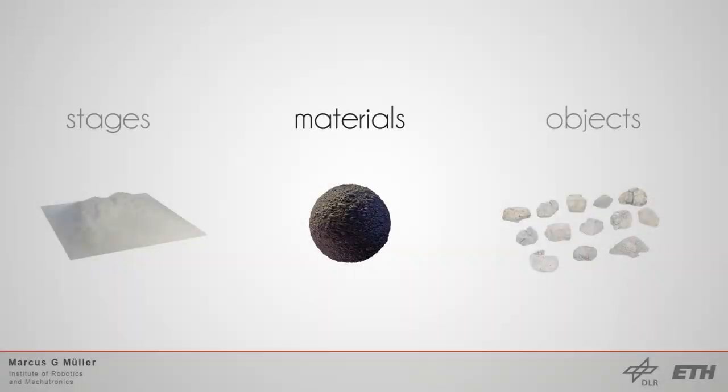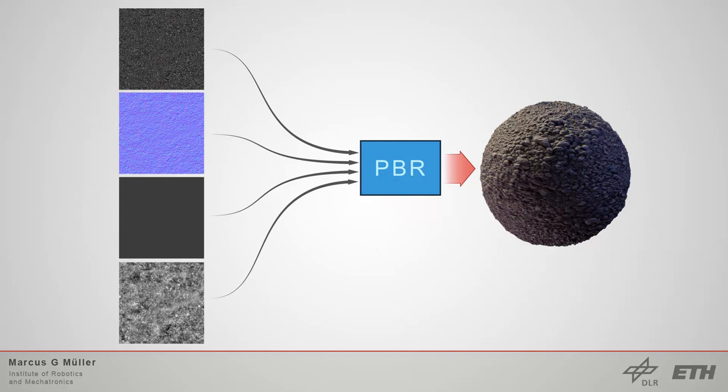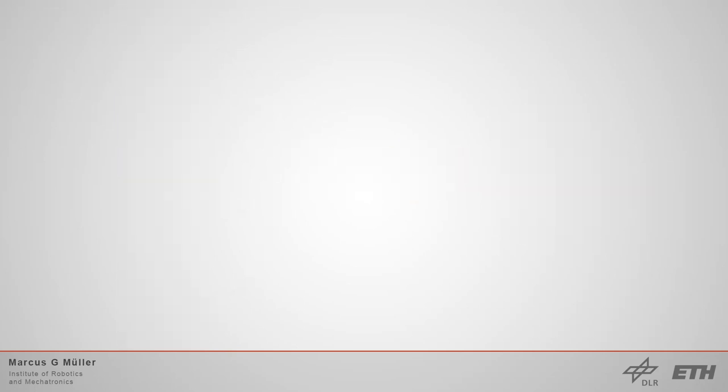Next, we have a look at the materials. OASIS makes use of the physical-based rendering, short PBR materials, to get the most photorealistic rendering results. There exists a huge amount of such textures on the web, and there are also several web pages which provide you the textures for free. Furthermore, there are many tutorials online on how to create your own custom PBR textures.